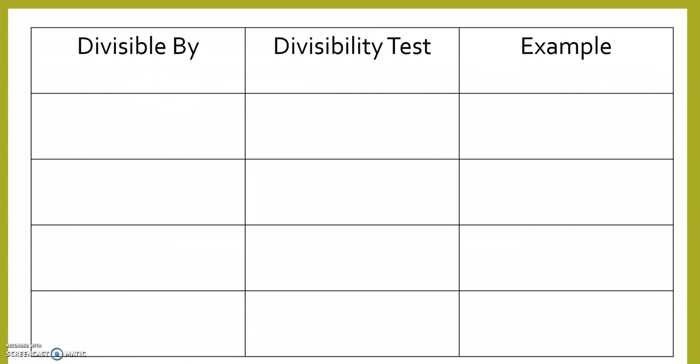When we're talking about numbers being divisible by other ones, here we go. Divisible by 2. The divisibility test is the number ends in a 0, 2, 4, 6, or 8. 8,466 ends in a 6. It is divisible by 2.